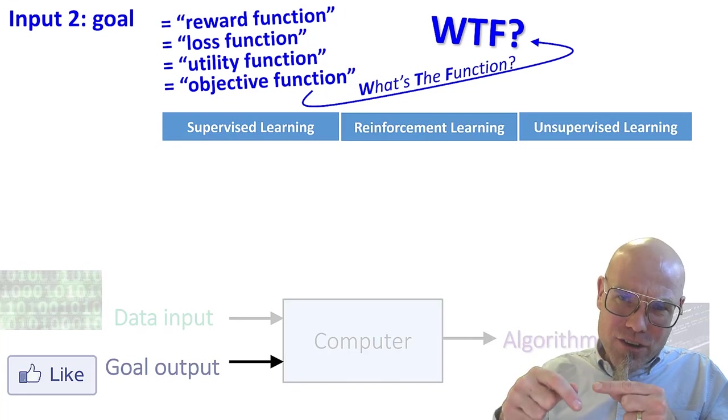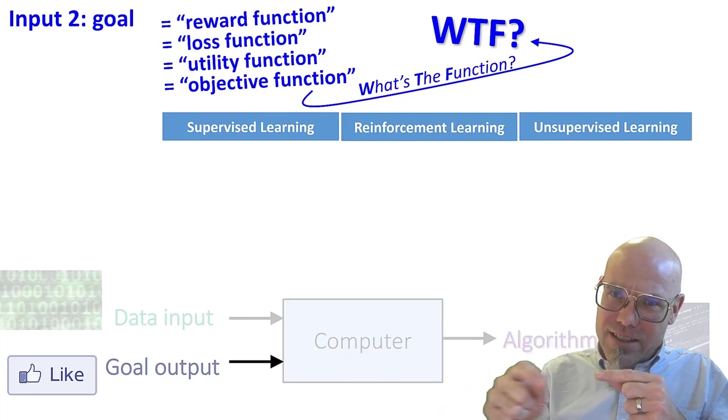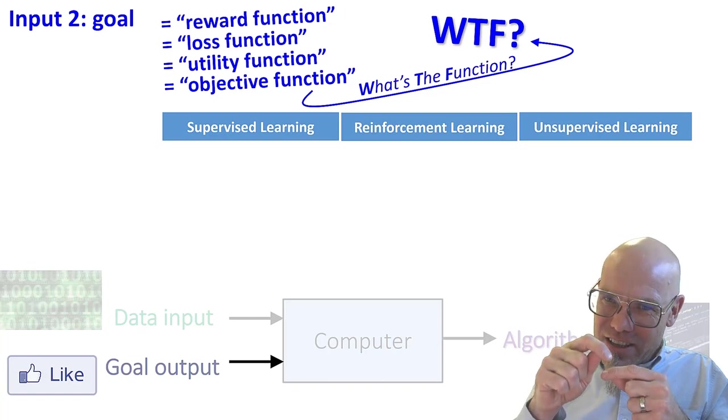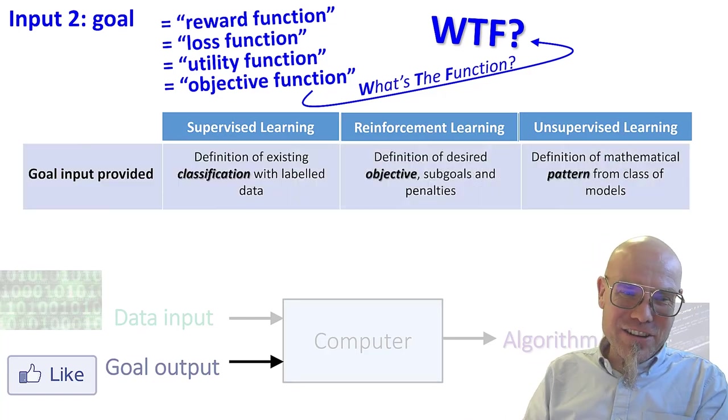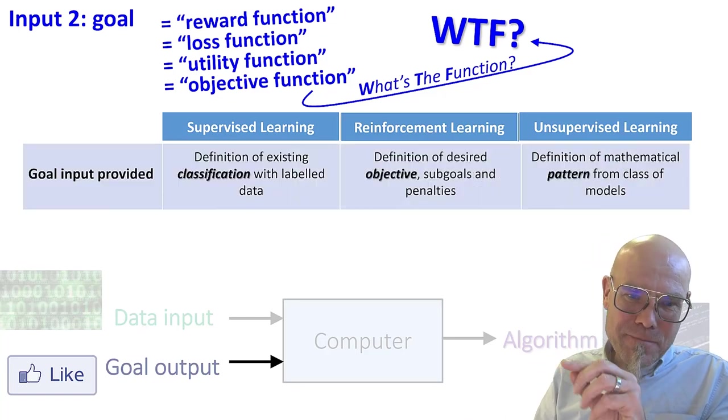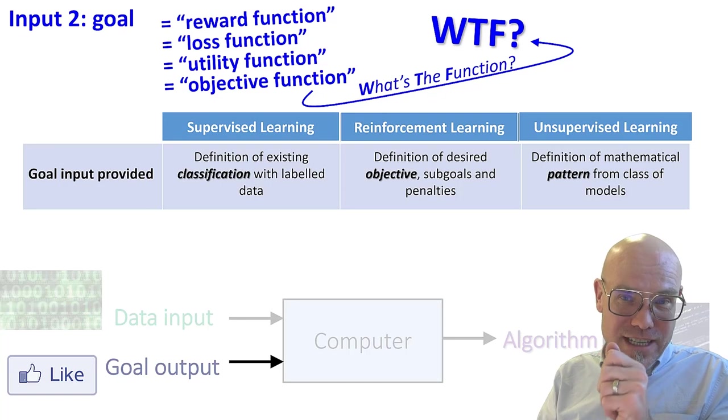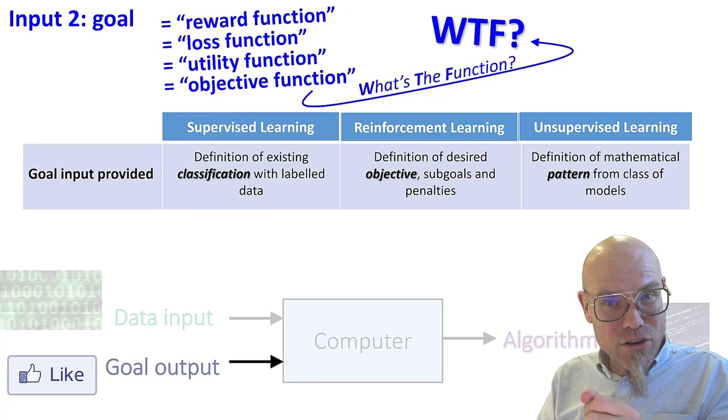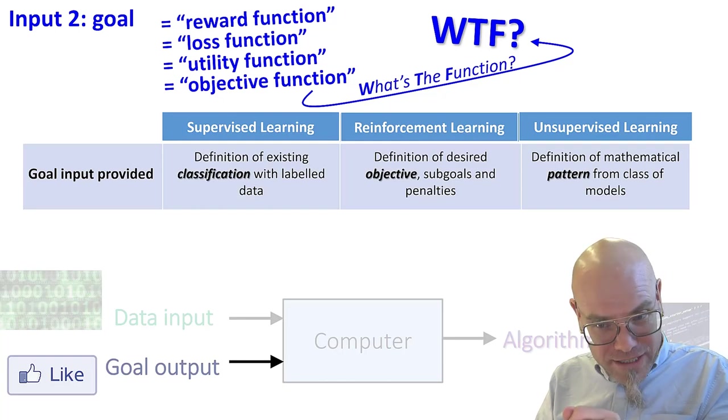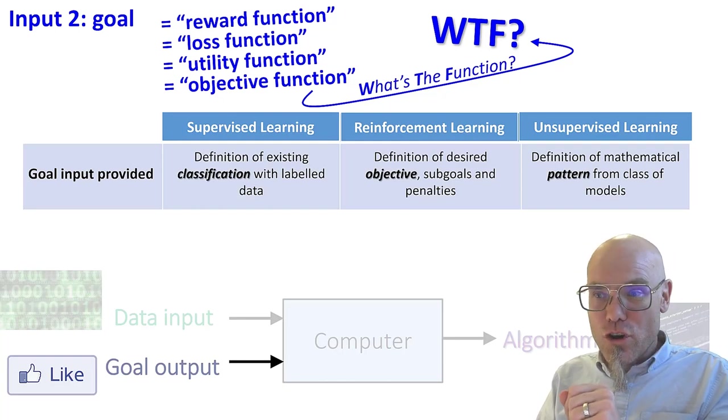And the goals also differ in these different, that's where my analogy with Rome breaks down. They differ in the way, the kind of goals. Okay, maybe I just tell you about the difference. So supervised learning gives you a classification. It learns by giving rewards or losses towards working with pre-established classifications.